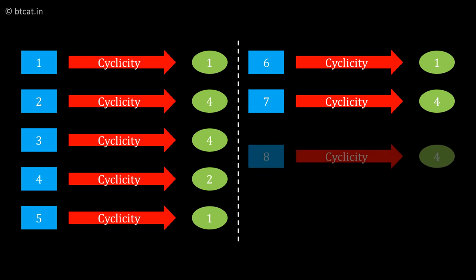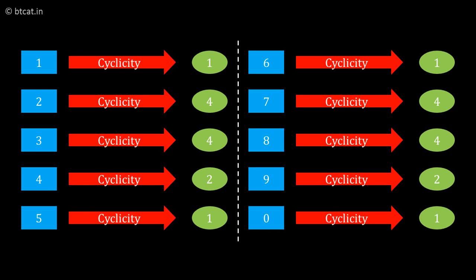Cyclicity of 6 is also 1. For 7 and 8 it is 4 each. For 9 it is 2 (9, 1, 9, 1...). And cyclicity of 0 is 1.